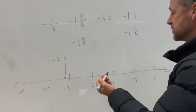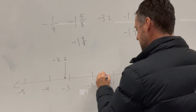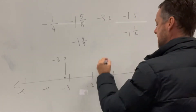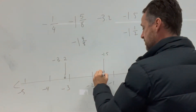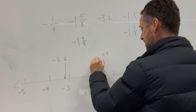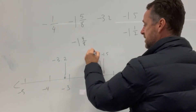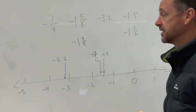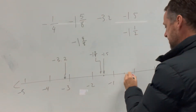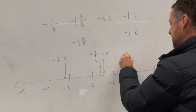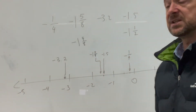The next smallest will be negative 1 and 5 eighths, and here's negative 1 and a half. That will be negative 1.5. Just smaller than that will be negative 1 and 5 eighths. And then negative 1 quarter — so that'll be there, negative 1 quarter. And that's our four things in order.